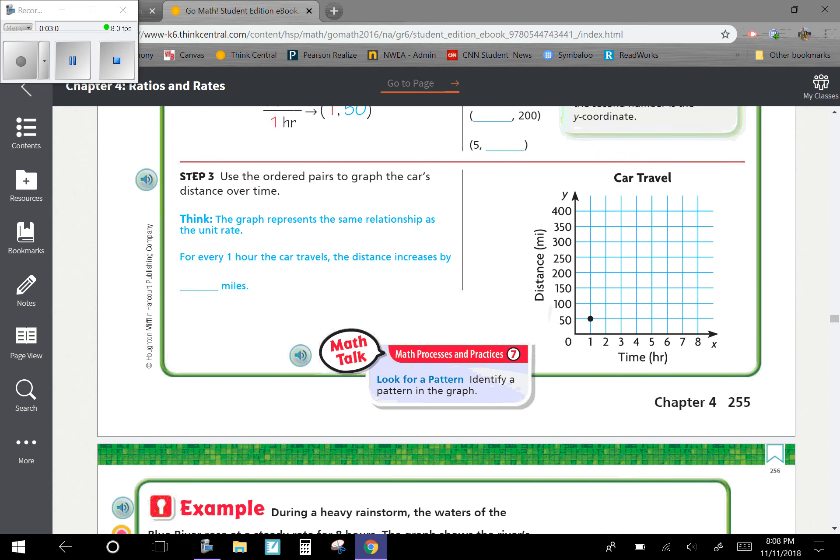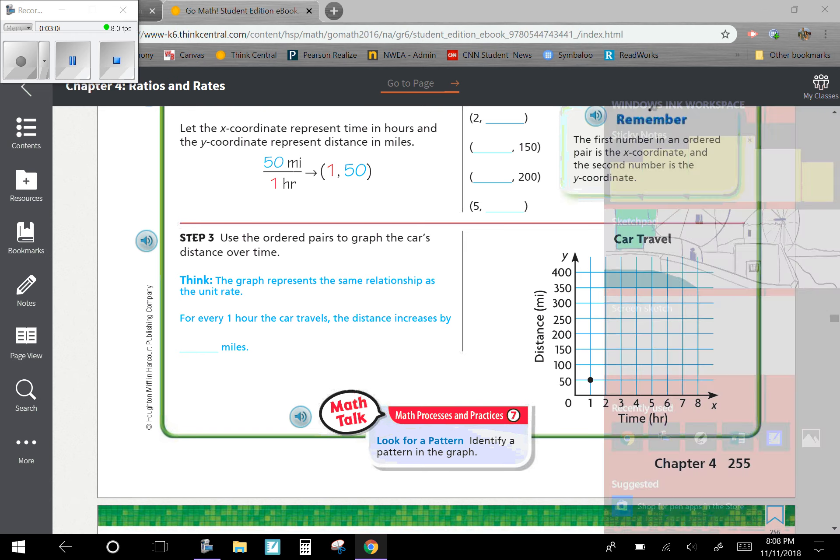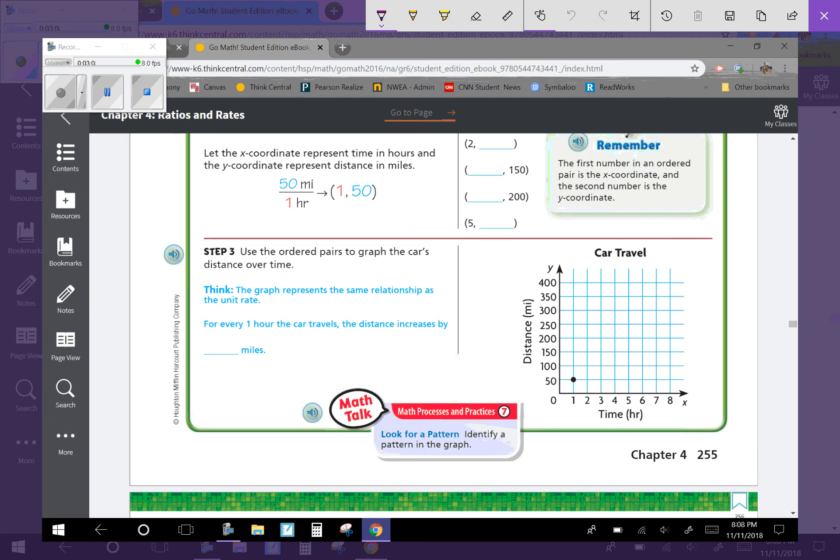Now we're going to look at Step 3. Step 3 says to use the ordered pairs to graph the car's distance over time. The graph represents the same relationships as the unit rate. For every one hour the car travels, the distance should increase by 50 if we're doing it correct. So 1 is 50. We're going to go right 2, up 100. Right 3, up 150. Right 4, up 200. Right 5, up 250.